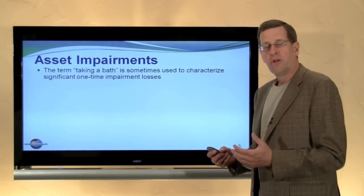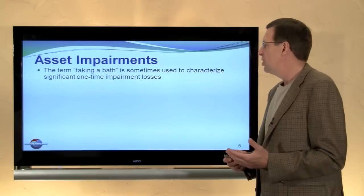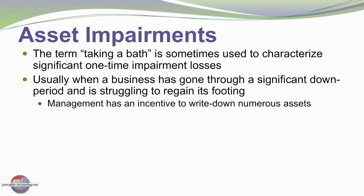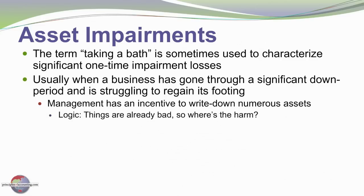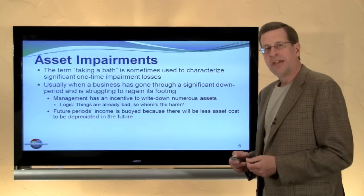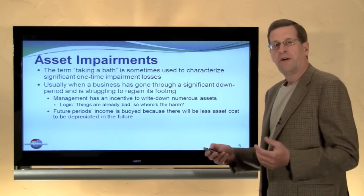Sometimes a company that is in trouble or having a bad year may consider taking a bath. It's used to characterize significant one-time charges to write off impairment losses. This usually occurs when a business has gone through a significant down period and is struggling to regain its footing. Management has an incentive to write off assets in this case. The logic may be that things are already bad, so writing off additional assets won't cause any additional harm. More importantly, with the assets being written off, future income can be expected to be buoyed because it will be avoiding depreciation charges that would have otherwise been associated with the assets that were written off. So this idea of taking a bath is sometimes seen as an opportunistic situation where assets are written off to enhance future income.